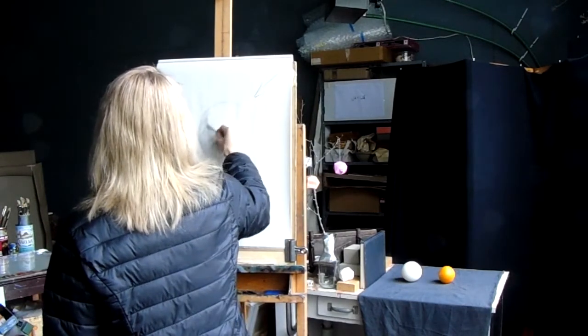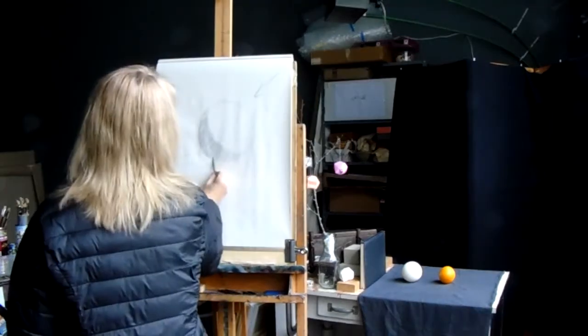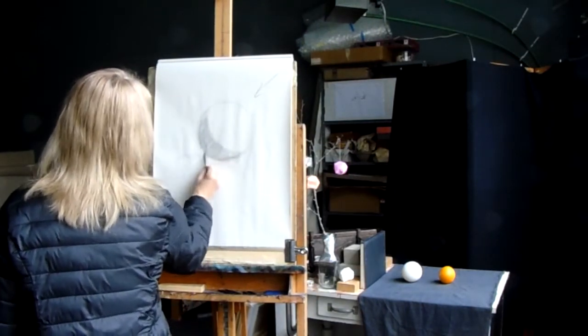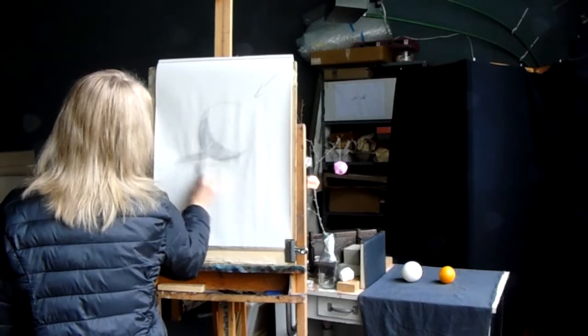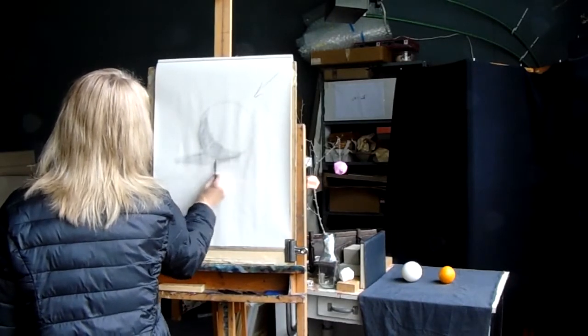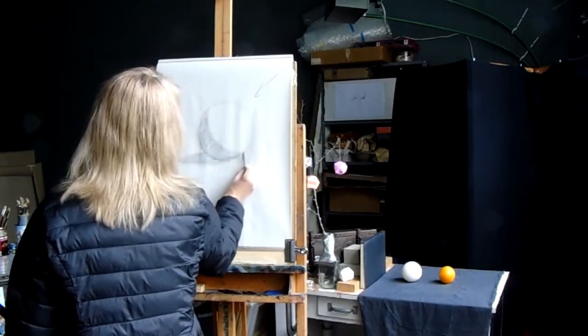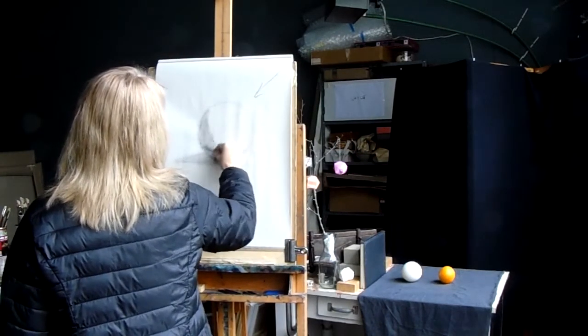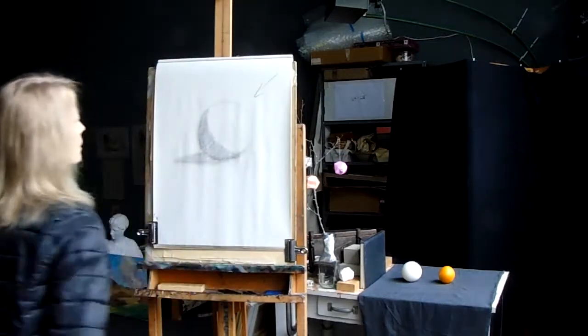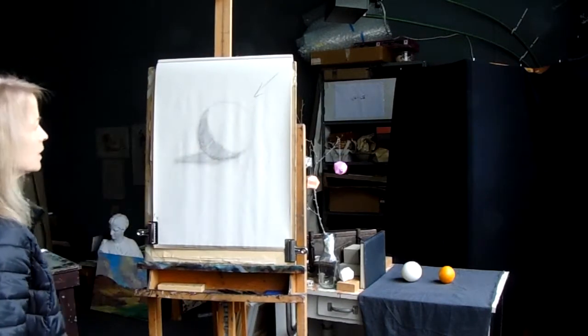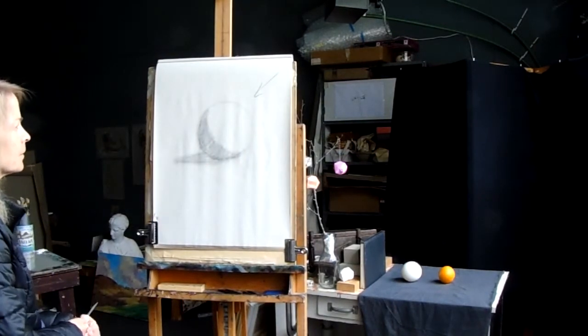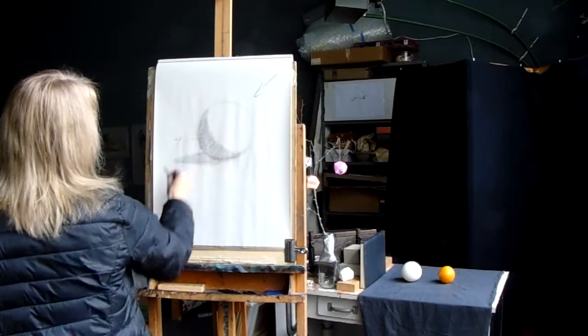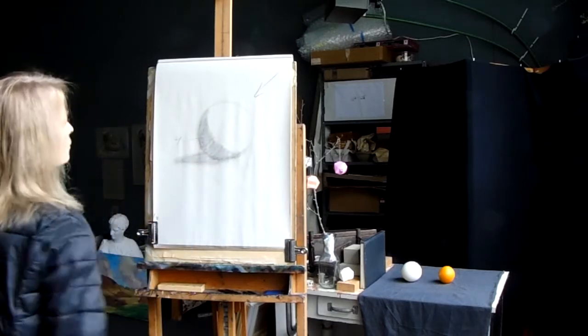I'm going to lay in a tone for that. I'm going to lay in the cast shadow. So right now, I have my sphere divided into the light side and everything else that's in the shadow side. So right now, this shadow is value 4. Cast shadow right now is value 4.